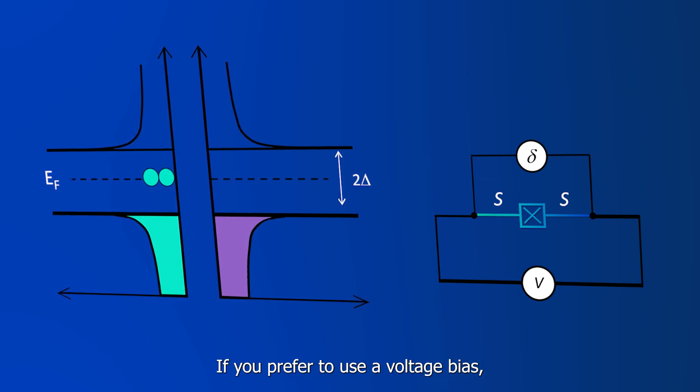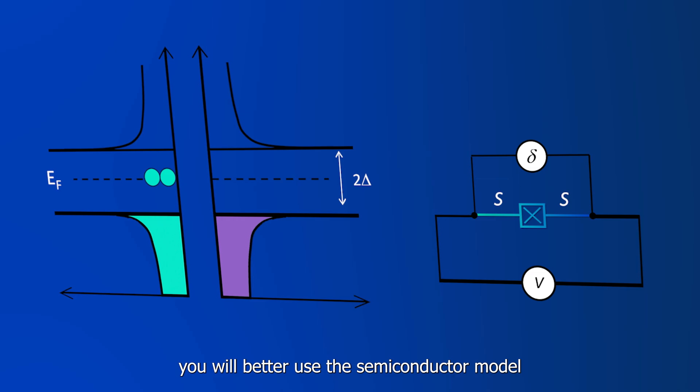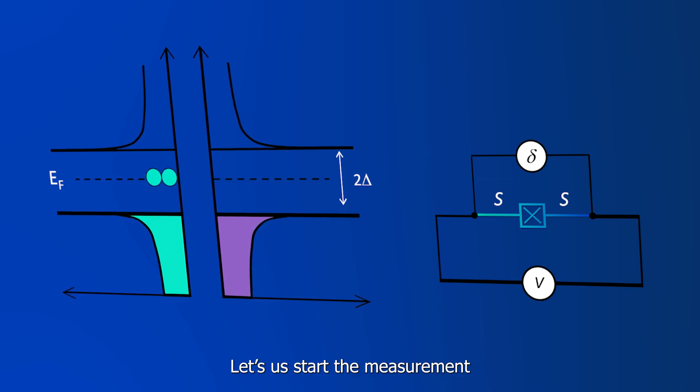If you prefer to use a voltage bias, you will better use the semiconductor model to understand what is going on. Let's start the measurement at zero applied voltage, and let's assume, for simplicity, that we are at zero temperature with no available quasiparticles.